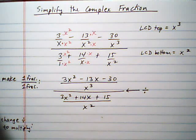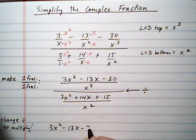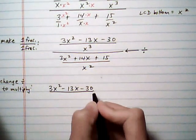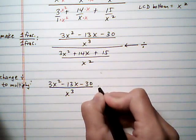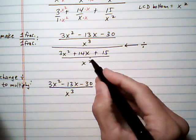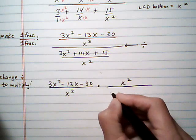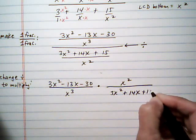So let's go ahead and do that. We're going to have this top fraction, 3x squared minus 13x, take away 30, all over x cubed. Instead of divided by, we do times the reciprocal of the bottom. So flip the bottom one, x squared over 3x squared, plus 14x, plus 15.